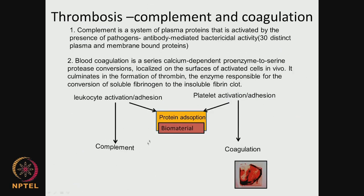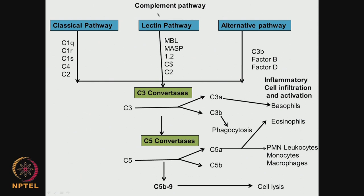The complement is a system of plasma proteins involved in antibody-mediated bactericidal activity. There are 3 pathways for the complement: the classical pathway, the lectin pathway, and the alternate pathway. There are almost 30 distinct plasma or membrane-bound proteins — they all get activated in a sequence of events and in turn activate eosinophils, basophils, monocytes, macrophages, and so on. Once activated, they can even kill the cells — so cell lysis also takes place. So many different types of complements can end up killing cells, causing inflammation and cell infiltration.